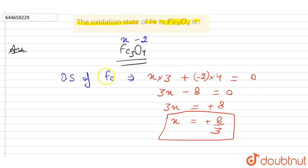That means the oxidation state of iron in Fe₃O₄, that is iron oxide, is x equals plus 8 by 3.